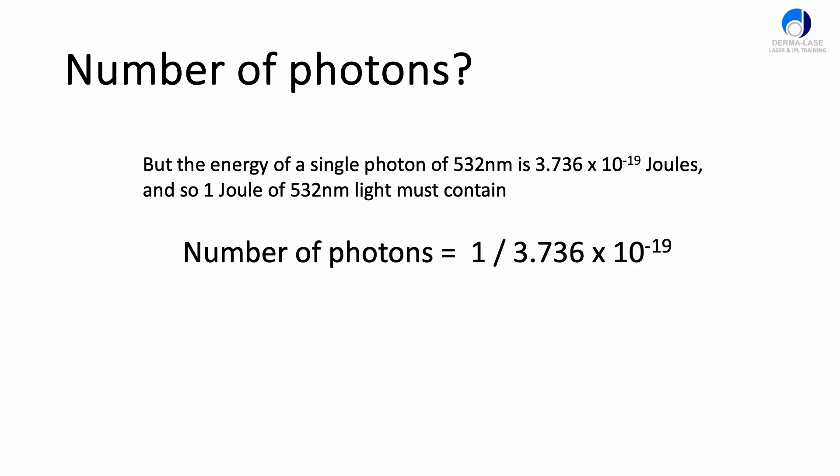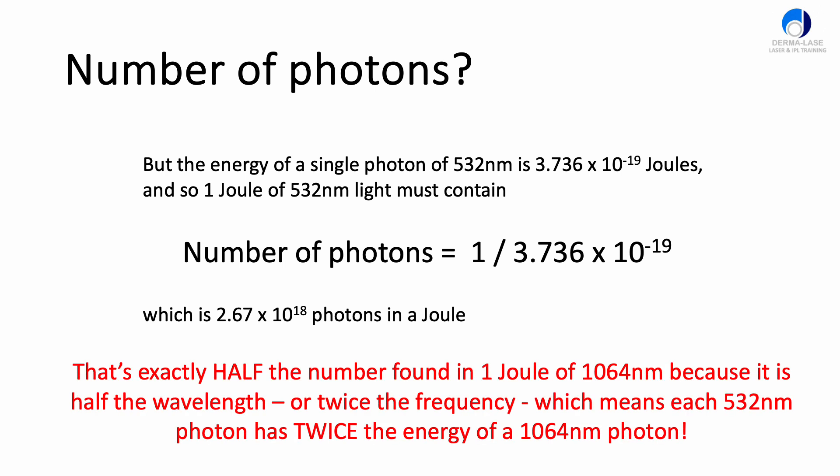Therefore the number of photons is 1 over that number, which equals 2.67 times 10 to the 18 photons in 1 joule of 532 nanometer light. That is exactly half the number of photons found in 1 joule of 1064 nanometer light. Because 532 is precisely half of 1064, the frequency of the 532 is twice the frequency of the 1064, because wavelength and frequency go hand in hand.